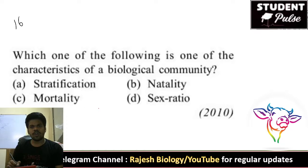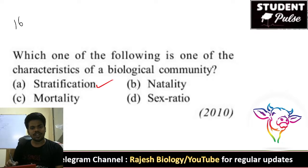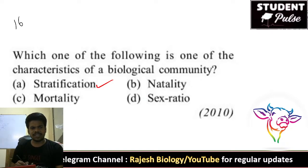Which one of the following is a characteristic of a biological community? The characteristic is stratification. All the remaining options — natality, mortality, sex ratio — are population-level factors. The characteristic of biological community is stratification.